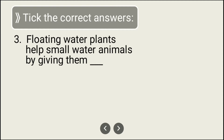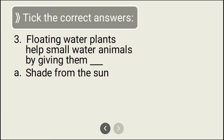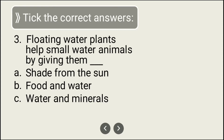The third question: floating water plants help small water animals by — options are: giving them shade from the sun, food and water, or water and minerals. The answer is shade from the sun. Floating water plants help small water animals by giving them shade from the sun.